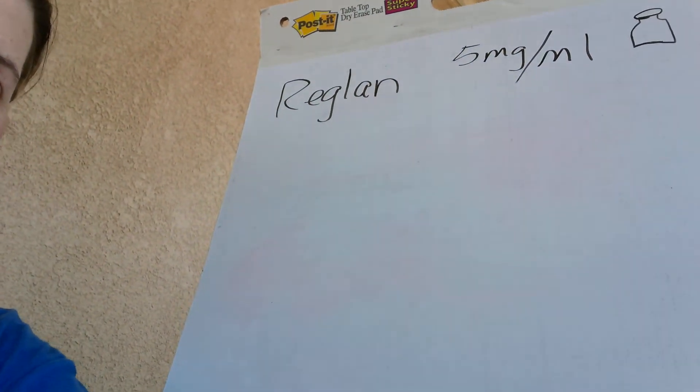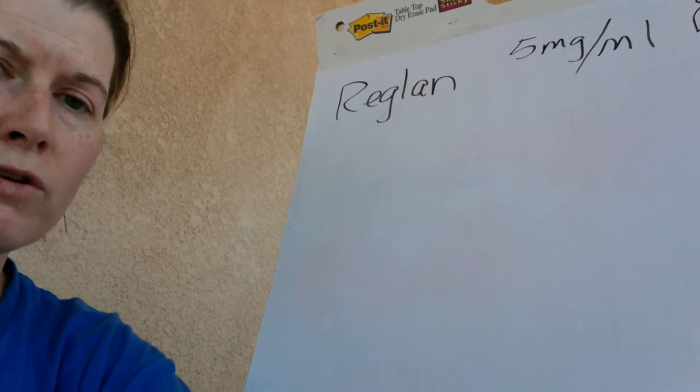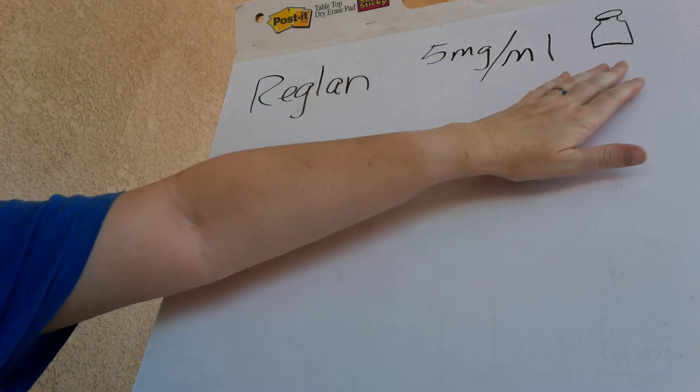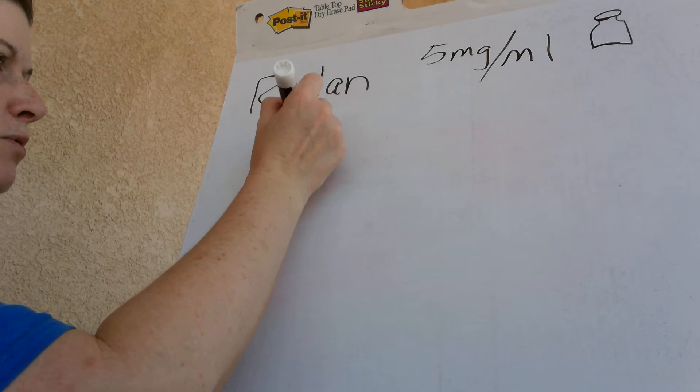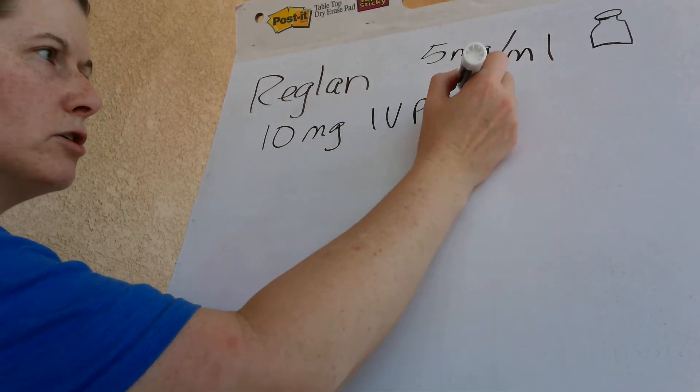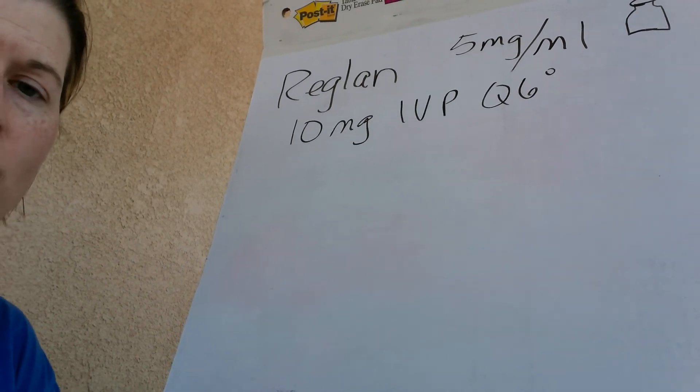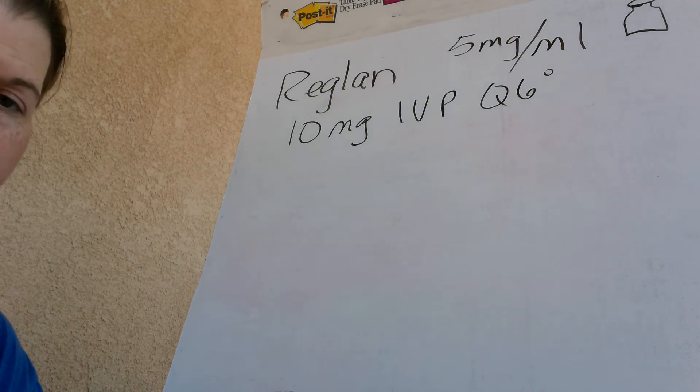Our first example is Reglan — metoclopramide — a common drug given for GI motility or nausea. Reglan comes in 5 milligrams per mL in a vial, and our normal dose is 10 milligrams per dose IV push every 6 hours. We need to find out how much to draw up in our syringe to have 10 milligrams.